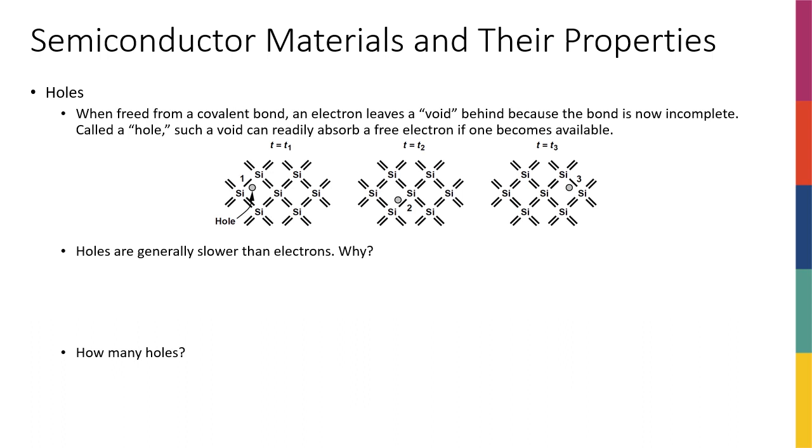When we talked about a silicon crystal, if I heat this up, the electrons will absorb thermal energy and break away from their bonds. When an electron leaves the bond, it leaves a void behind it. We call that void a hole.